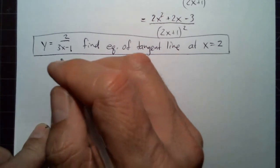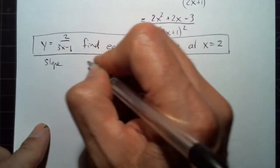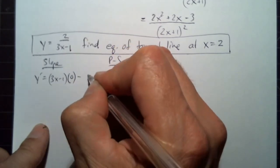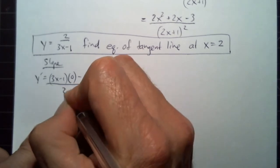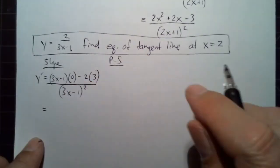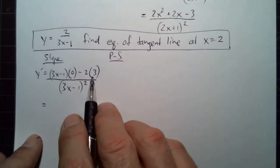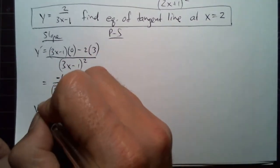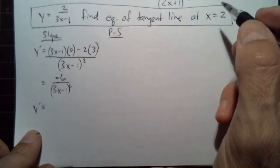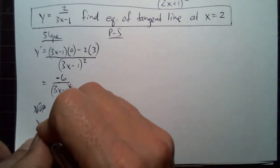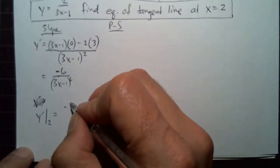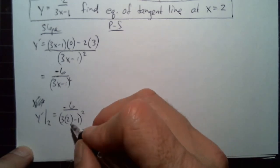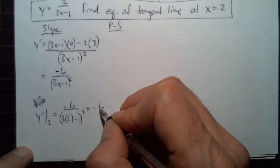Go ahead and pause the video and try this one. Low D high minus high D low, over low squared — the denominator is squared. We get 0 minus 6 in the numerator. We evaluate at x = 2, so y′ evaluated at 2: the denominator gives us 6 minus 1 equals 5, squared is 25. So the derivative is negative 6 over 25.